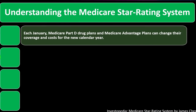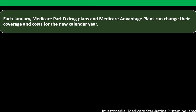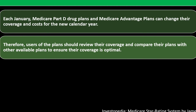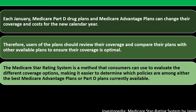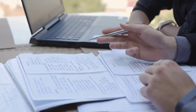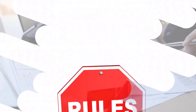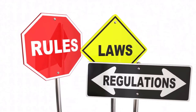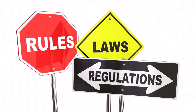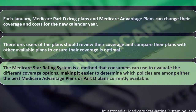Understanding the Medicare Star Rating System: each January, Medicare Part D drug plans and Medicare Advantage plans can change their coverage and costs for the new calendar year. Therefore, users of the plans should review their coverage and compare their plans with other available plans to ensure their coverage is optimal. The Medicare Star Rating System is a tool that consumers can use to evaluate different coverage options, making it easier to determine which policies are among the best plans currently available.